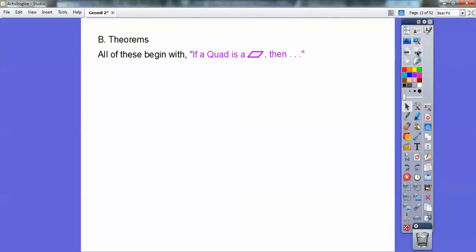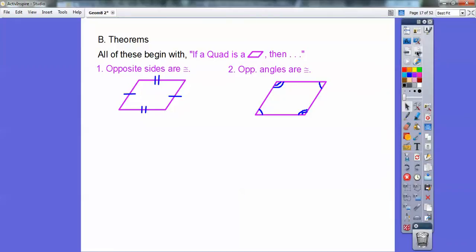So here's some theorems. All these theorems begin with, if a quadrilateral is a parallelogram, then. So here we go, all these are parallelograms. So then, opposite sides are congruent. So here, those two opposite sides are congruent on there. Opposite angles are congruent. So here, those two opposite angles are congruent, both pairs.